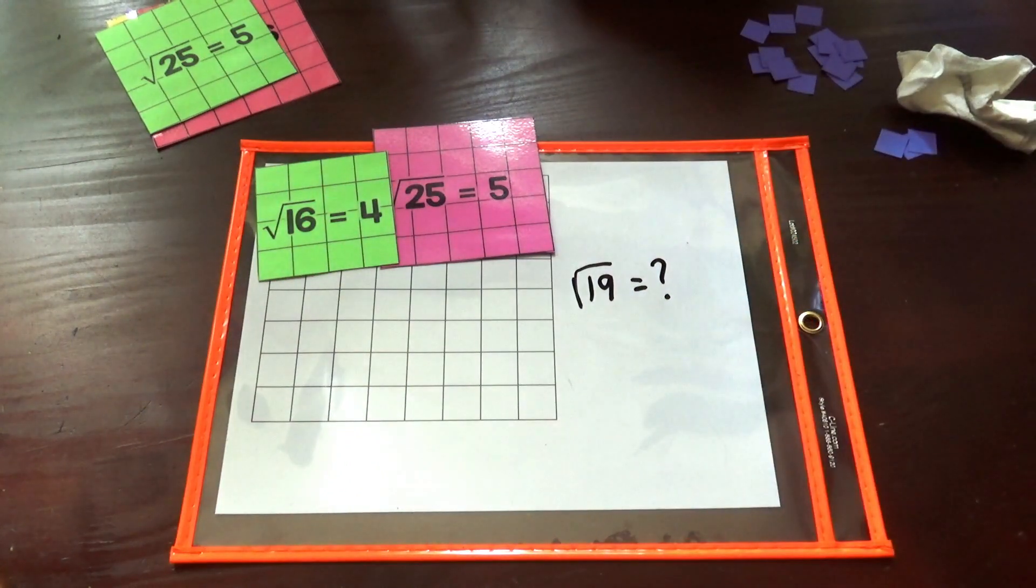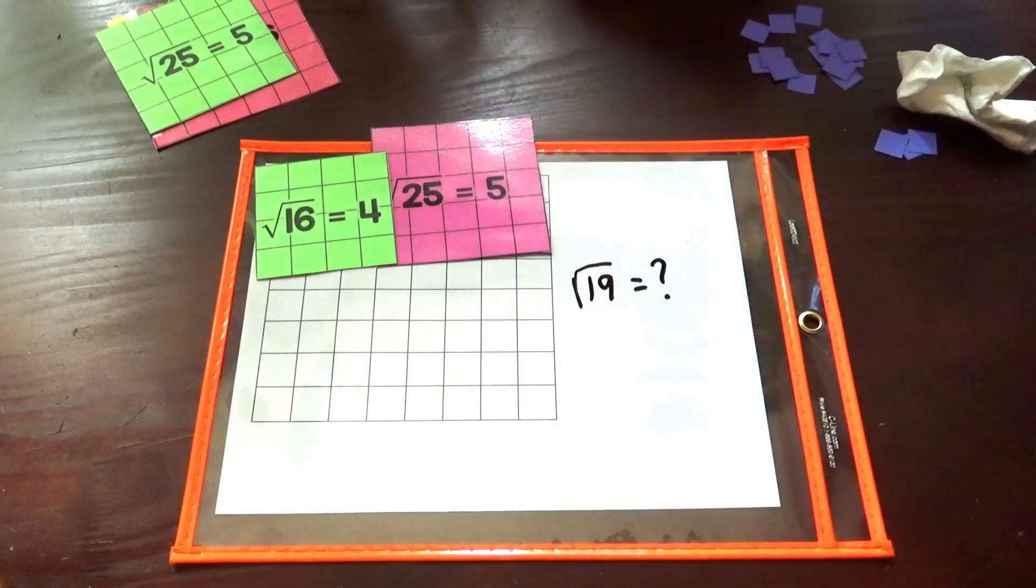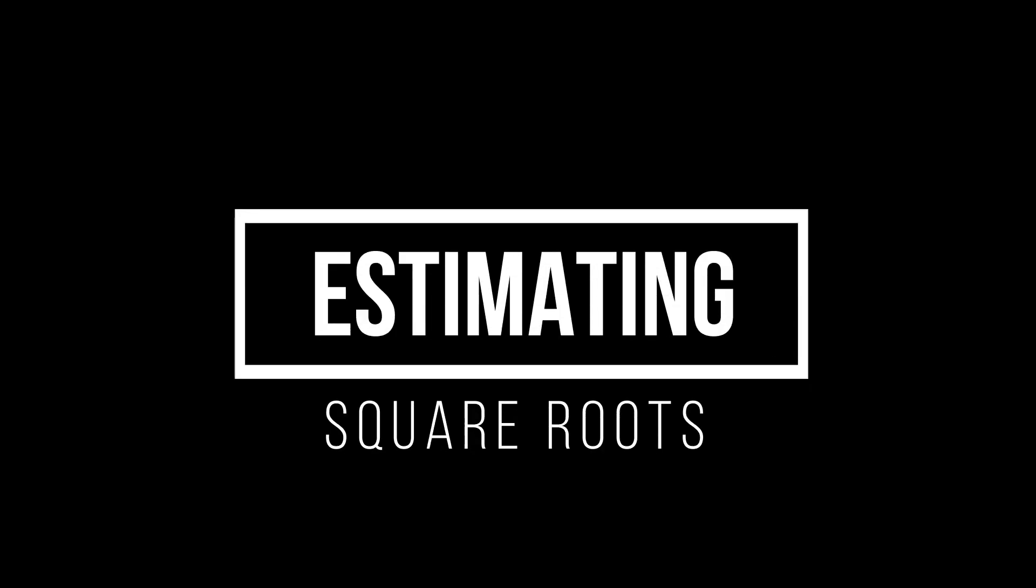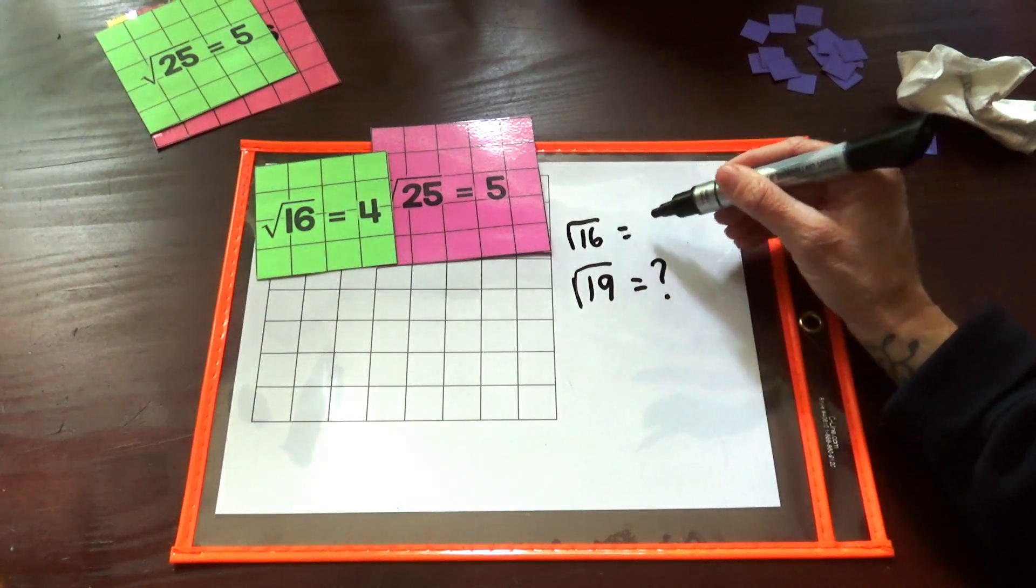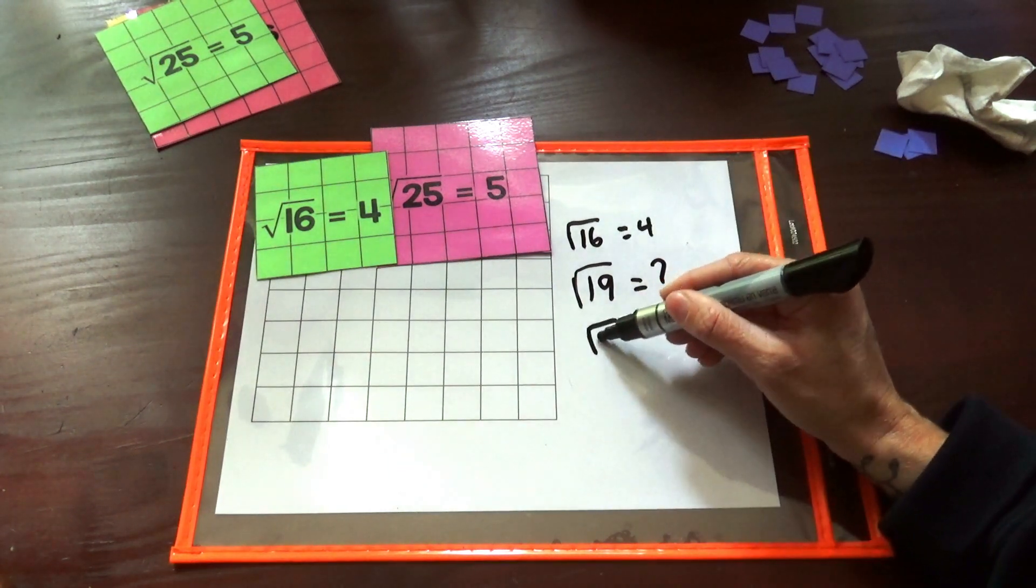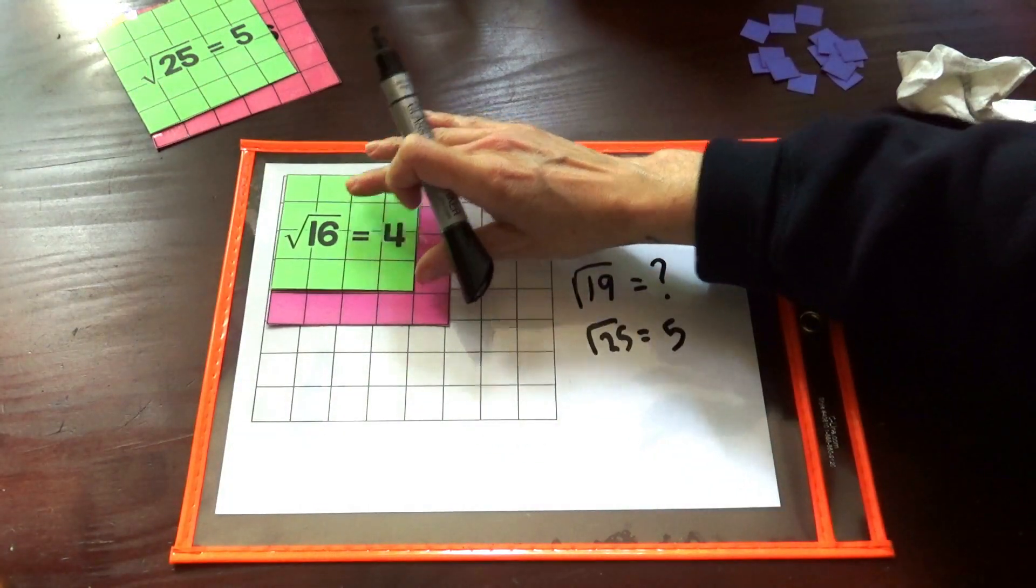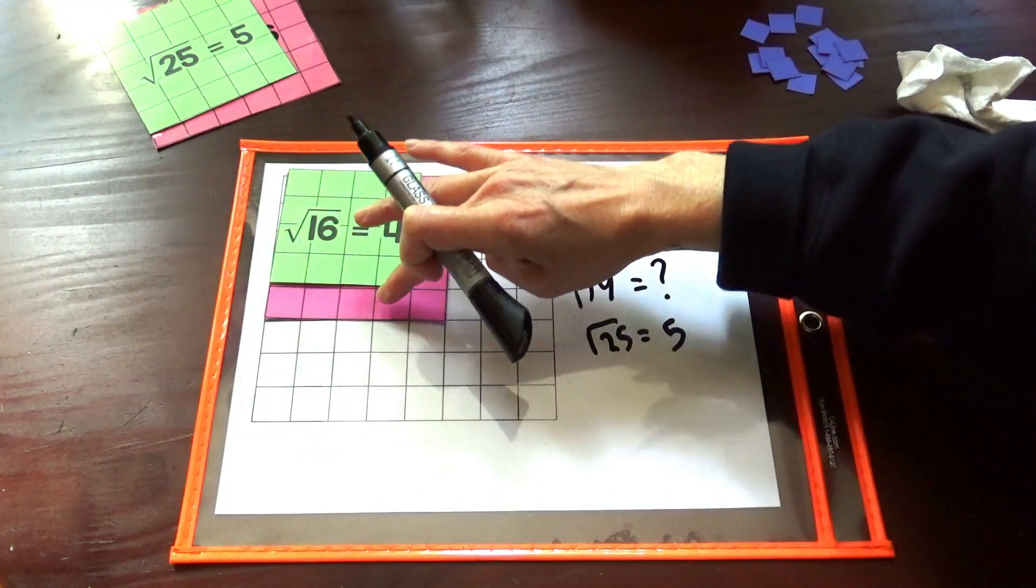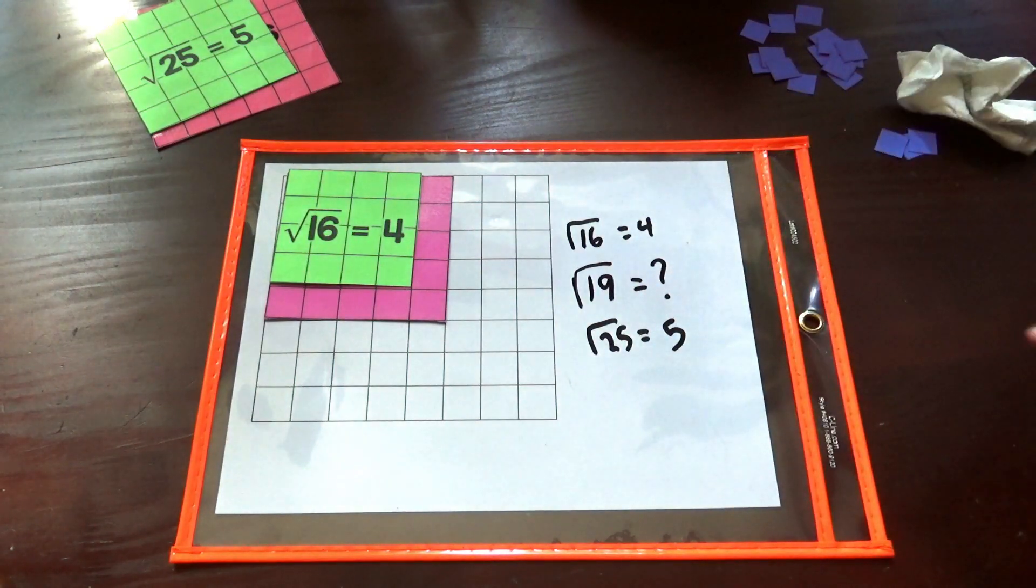We can estimate the square root of 19 by using what we know about the square root of 16 and the square root of 25. We know the square root of 16 is 4 and we know that the square root of 25 is 5, and it turns out that there's 9 to get from 16 to 25. We're going to use that in a second.